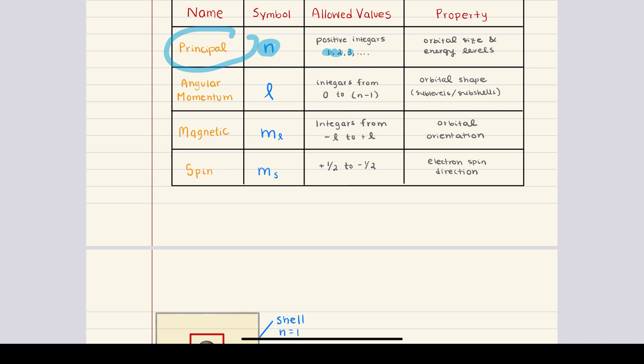But we're going to see exactly why this makes sense as we continue. The second quantum number is the angular momentum quantum number, represented by the symbol l. This number determines the shape of the subshell within a given shell, and the values of l range from zero to n minus one. Each value corresponds to a different type of subshell. When l is equal to zero, the subshell is an s subshell, which is spherical in shape.